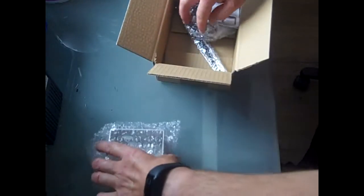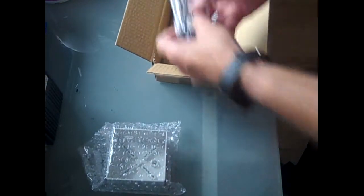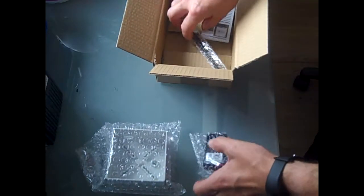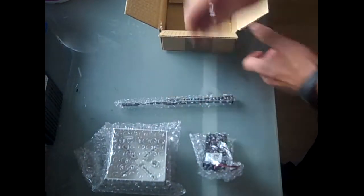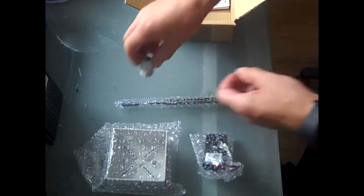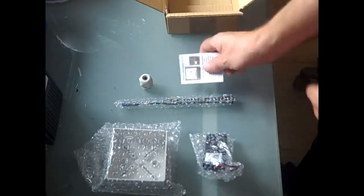So we get the enclosure, we get a flasher unit, we get an antenna, a gland for the single unit, and some instructions.